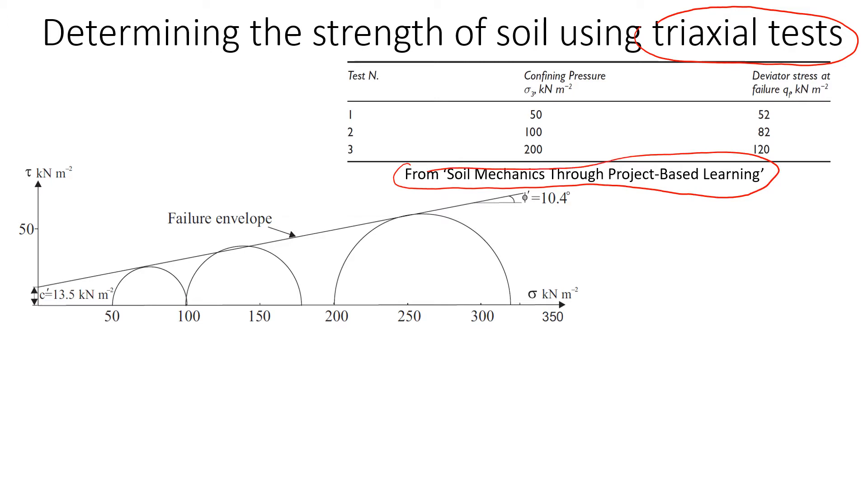You will see that there are three triaxial tests, and for each test we know the confining pressure sigma 3 that we kept constant.